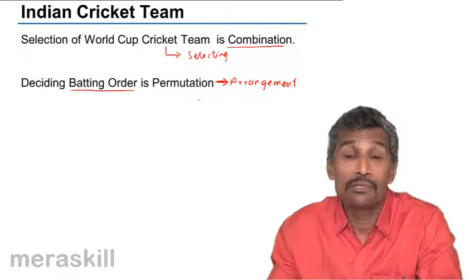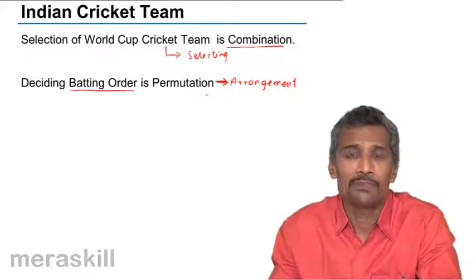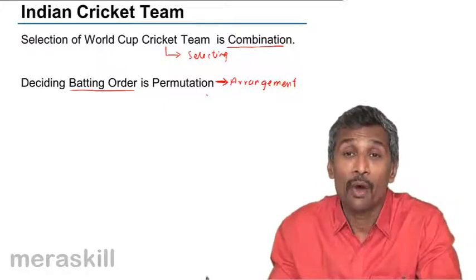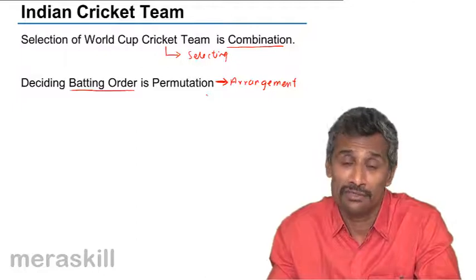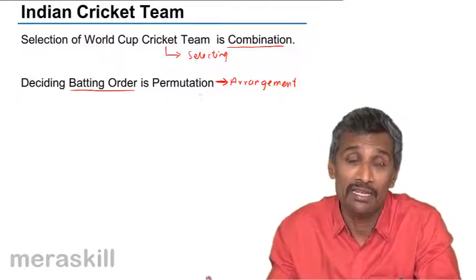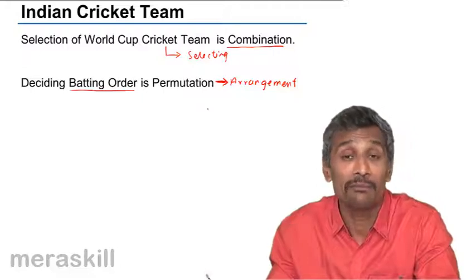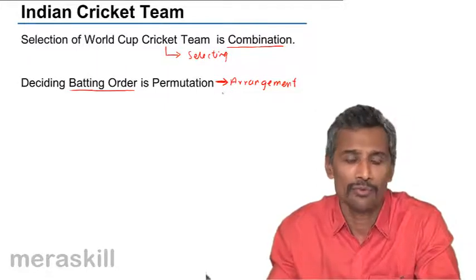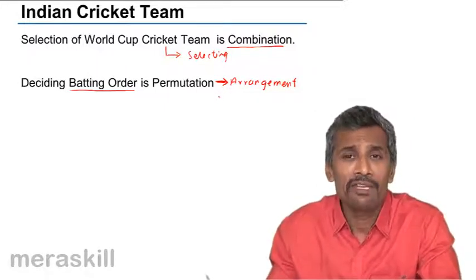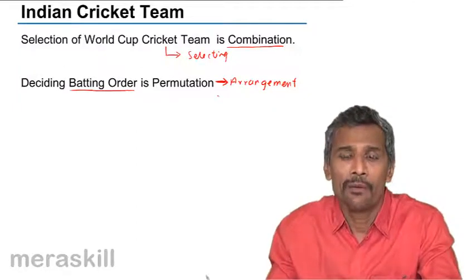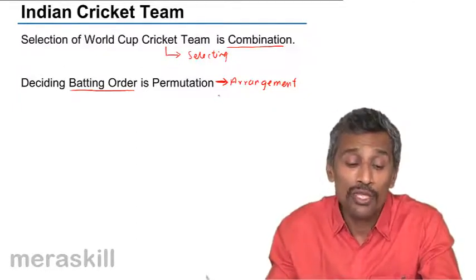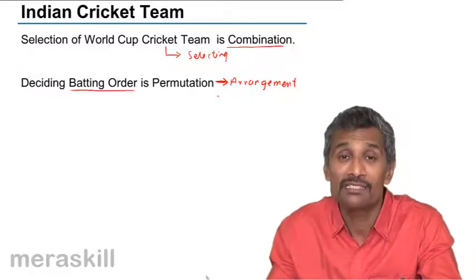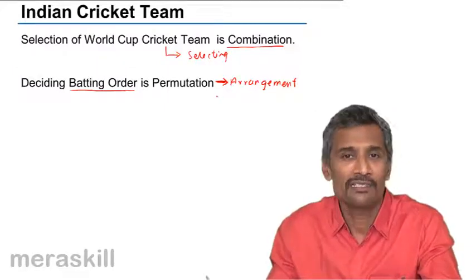Another example: suppose you are selecting the trousseau — various types of dresses for a bride's wedding. You may select about five dresses — that is combination. But the order in which you wear them for specific functions is important. On a particular day you have to wear a specific one. So the order in which you arrange them is a permutation.